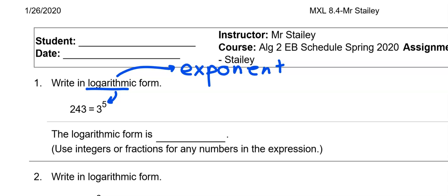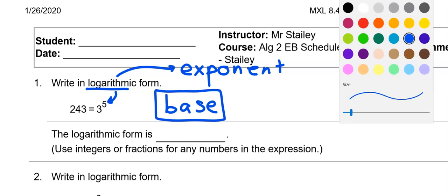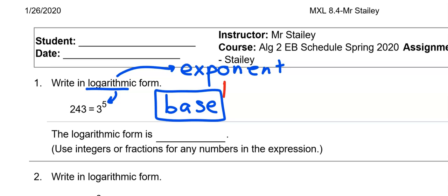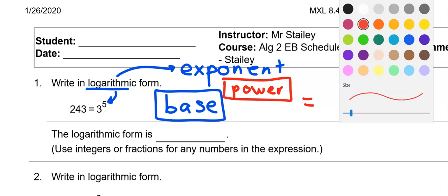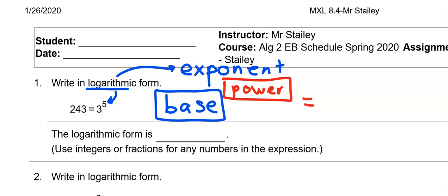Now, what you see in front of you is a base. I'll put a box around it. Raised to a power. And it equals a value. Now, they use the word argument. But, in all reality, it's just a value.